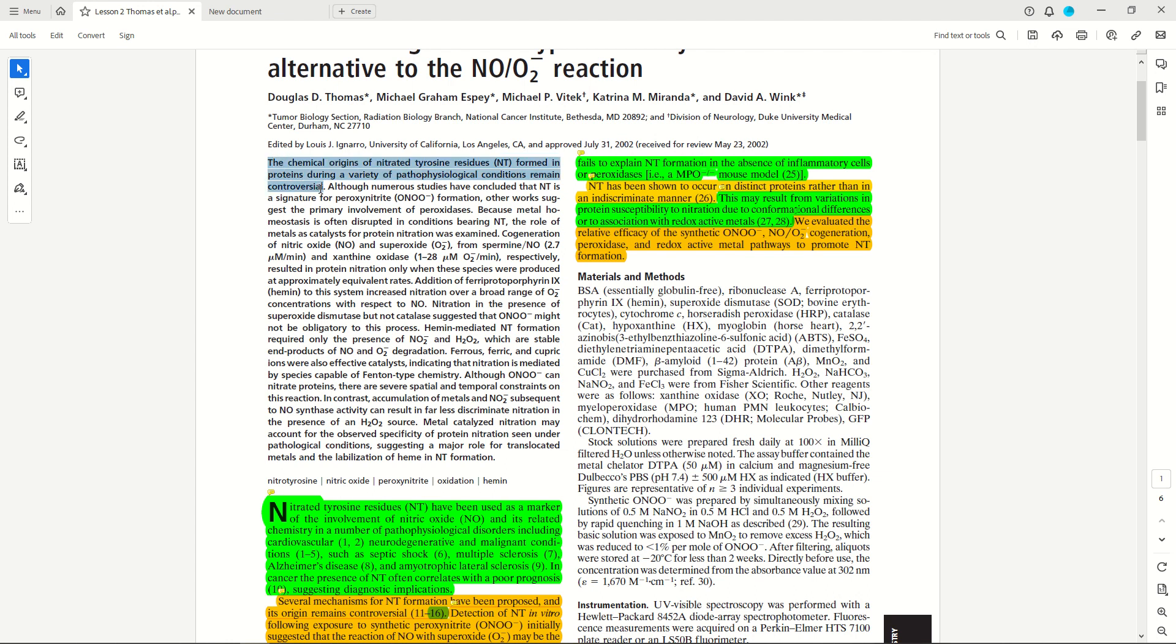So the first sentence discusses the chemical origins of nitrated tyrosine residues for pathophysiological conditions—that reflects this first paragraph here. And then although numerous studies have concluded that NT is a signature for peroxynitrite formation, other works suggest the primary involvement of peroxidases. So again, that alludes to this controversy and the subsequent knowledge gap that we're not able to resolve this controversy yet.